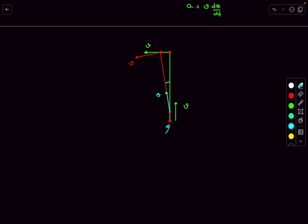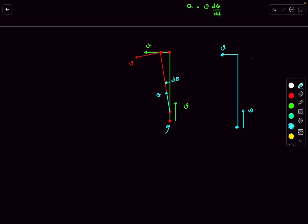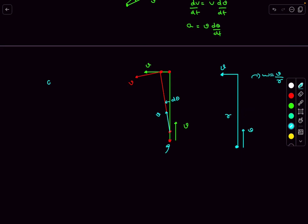The angular velocity ω of the velocity vector is the same as the ω of this line joining the two particles, and ω = v/r, where r is the distance between the two particles. Therefore, the acceleration a = v × (dθ/dt) = v × (v/r) = v²/r.